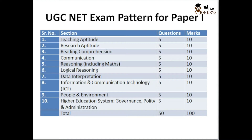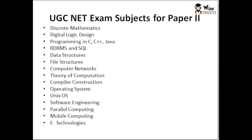We at Wise Monkeys are going to cover Paper 2 for Computer Science and Applications. Let us understand the exam pattern for Paper 2 in UGC NET for Computer Science and Applications. The first subject is Discrete Mathematics, which is a very important subject. Sometimes people get confused thinking questions come from Data Structures, but in reality they all come from Discrete Mathematics.